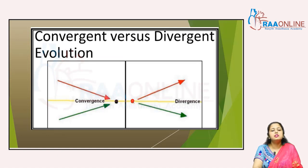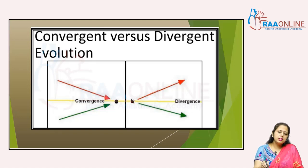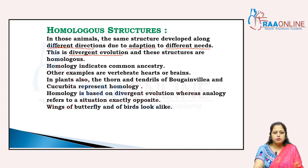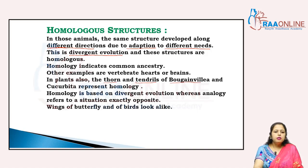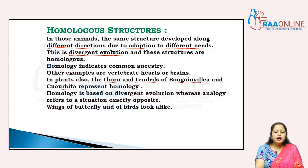Homology indicates common ancestry. The origin is the same, that's why common ancestry is there. Examples include vertebrate hearts and brains, and in plants, the thorns and tendrils of bougainvillea and cucurbita, which represent homology.